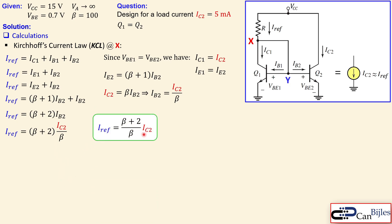If you want to express the load current, you can flip the fraction: IC2 equals IRF times β/(β+2). You can see directly that IC2 is approximately equal to IRF when beta is large. If beta is only five or six, as in power transistors, there is a large difference. But if beta is 100 or 500, the difference is very small. So we can say IC2 is approximately IRF, but not exactly — we will verify this in simulations.